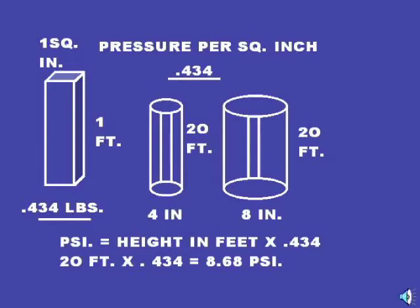Now, let's look at a 4 inch pipe, 20 feet high. We want to know the pressure per square inch. We're only measuring a column of water in that 4 inch pipe, one square inch, 20 feet high. So pressure per square inch equals height in feet times .434. 20 feet times .434 equals 8.68 pounds per square inch.